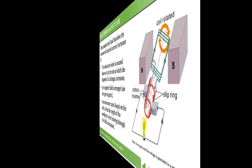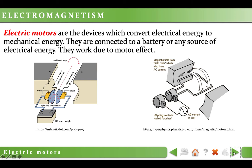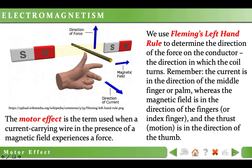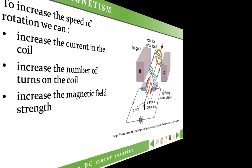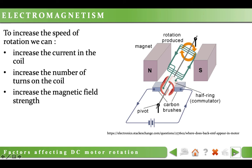Electric motors are devices which convert electrical energy to mechanical energy. They are connected to a battery or any source of electrical energy and work due to the motor effect — any current-carrying wire in a magnetic field will experience a force. We use Fleming's left hand rule to determine the direction of the force on the conductor. The current is in the direction of the middle finger, the magnetic field is in the direction of the index finger, and the force is in the direction of the thumb. To increase the speed of rotation in motors, we can increase the current in the coil, the number of turns in the coil, or the magnetic field strength by using stronger magnets. All three increase the force on the coil so it rotates faster.